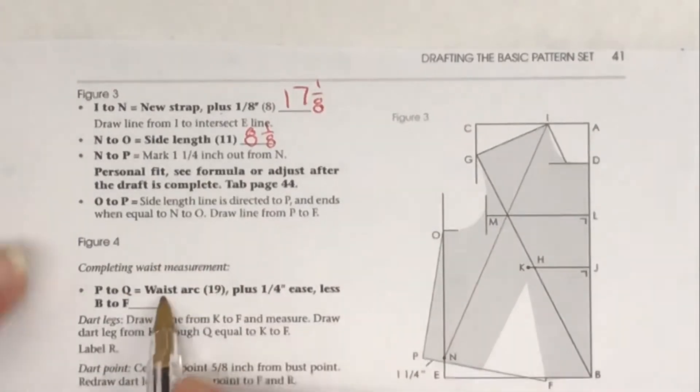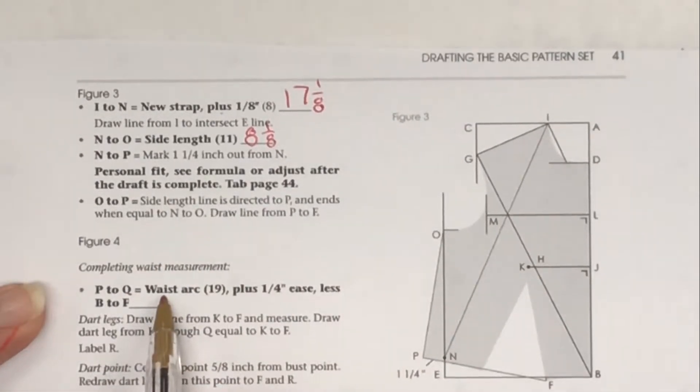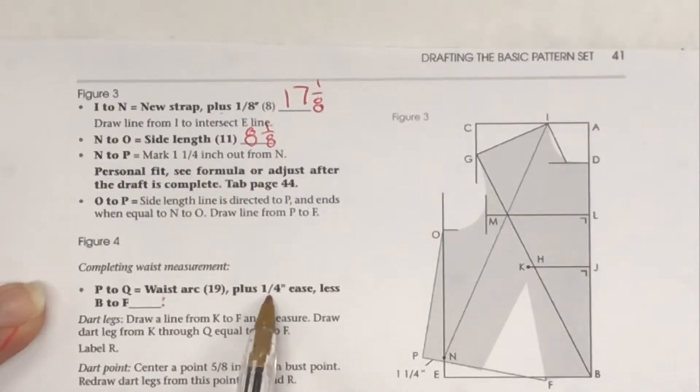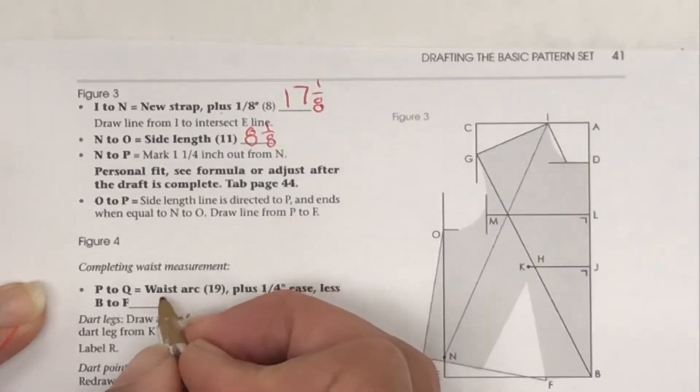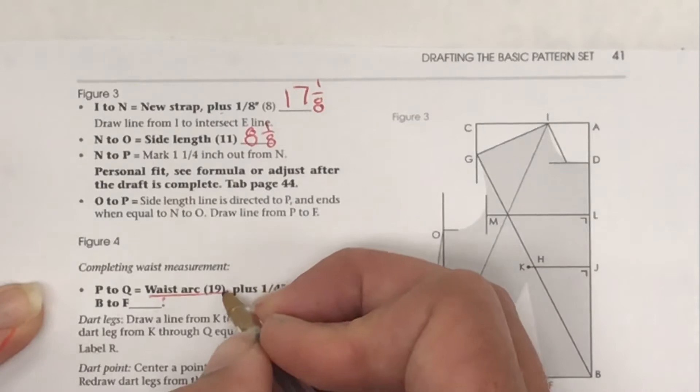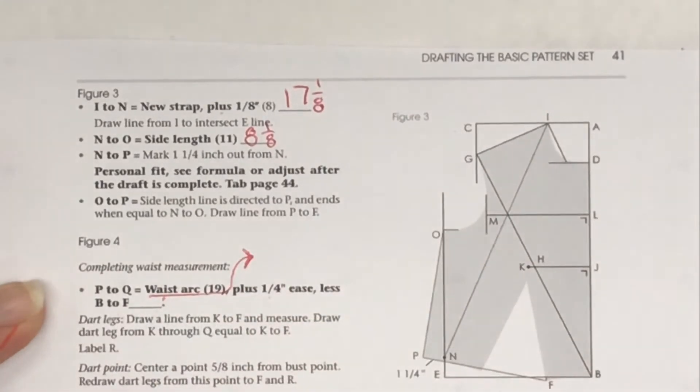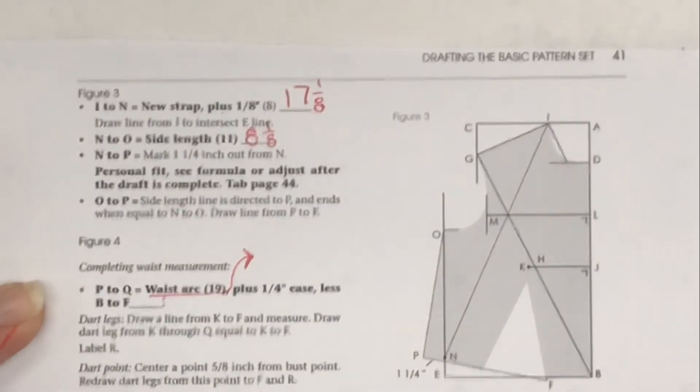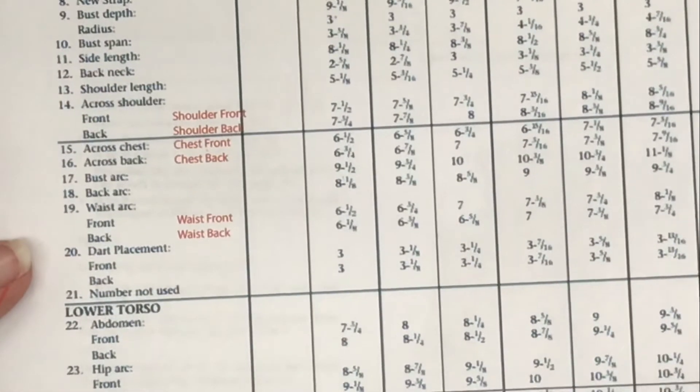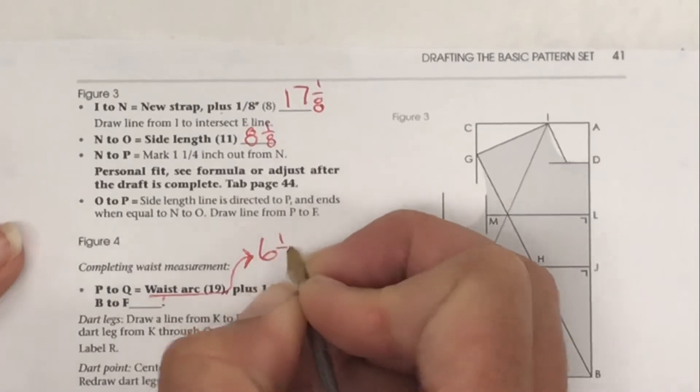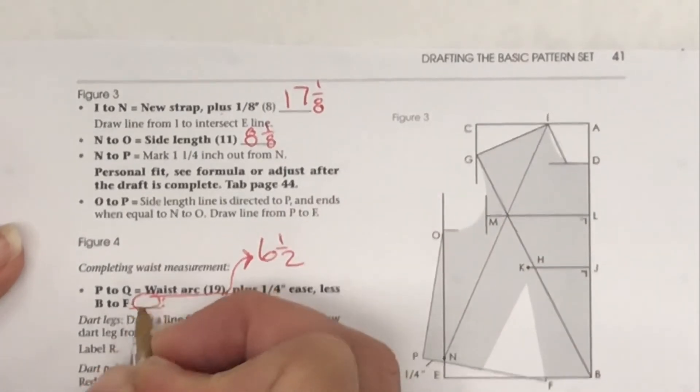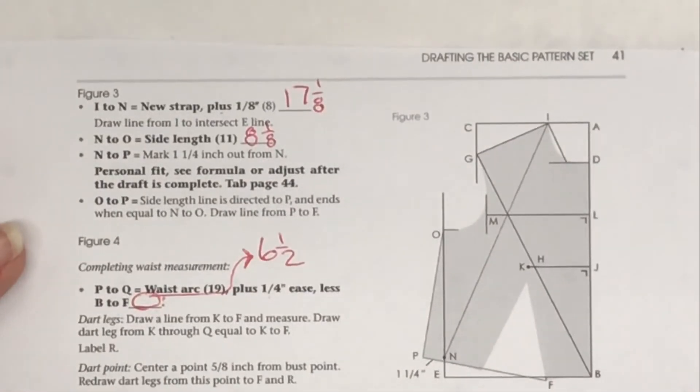Our waist arc, number 19, we have to add 1/4, and then we have to subtract a measurement that we haven't drafted yet. I think what I'll do for right now is take waist arc number 19 and I'm just going to write what that is, and I'll do the math formula when I get to that step. Waist arc, number 19: 6 and 1/2. We'll figure that out later.